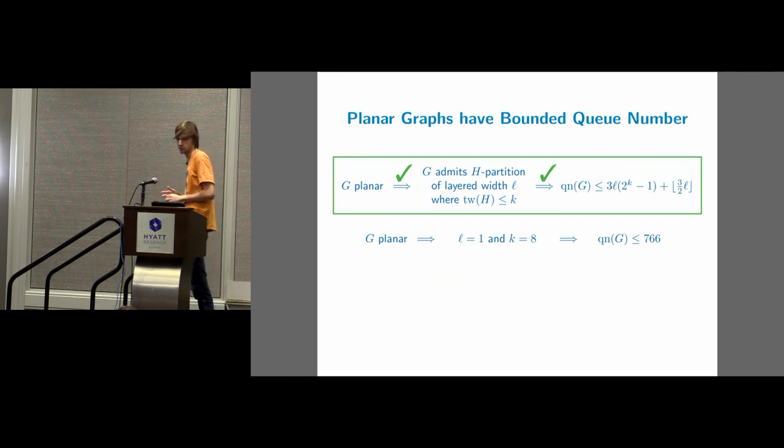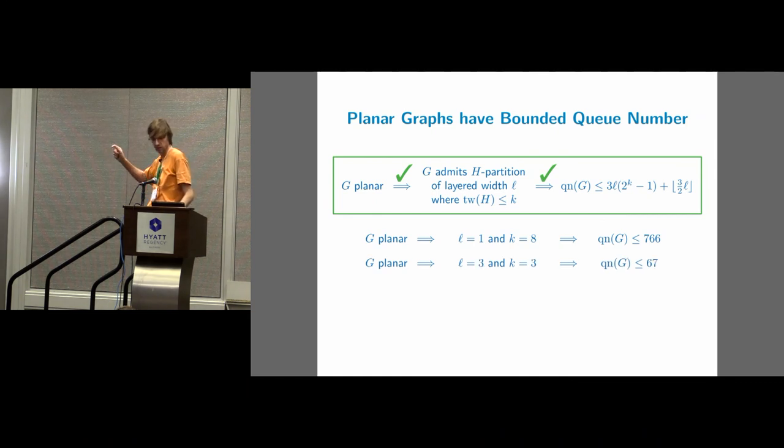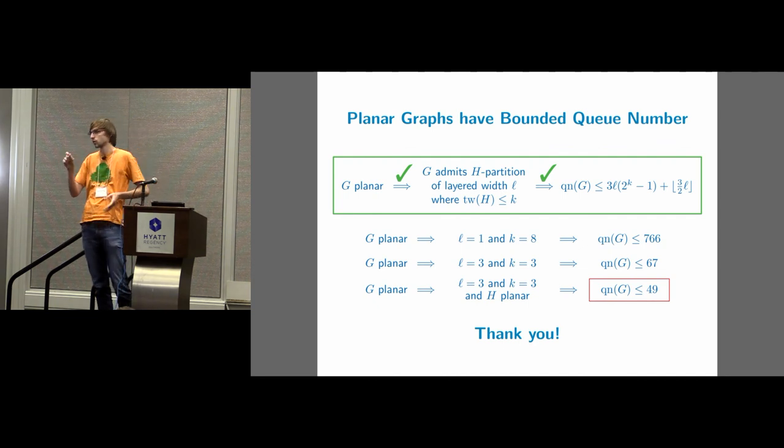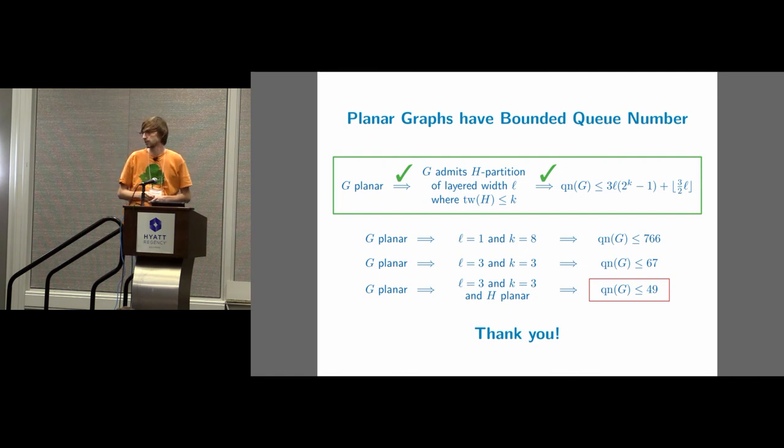So basically I showed you ideas of everything except that when you just plug in the numbers of what I've shown you, you don't get the 49 from the beginning. You get 7066. Well, what I didn't show you, you can tweak this proof to get layered width three, but tree-width also three, since the tree-width is exponential in this bound, this is beneficial for us, but still you get only 67. Well, if you then realize that in our proof, the actual H graph that you get is planar, you can apply a very specific bound on the Q number of planar graphs of tree-width three, which then gets you down to 49.